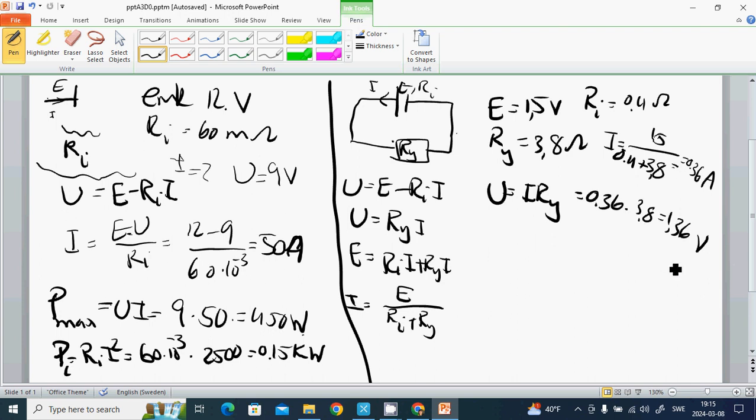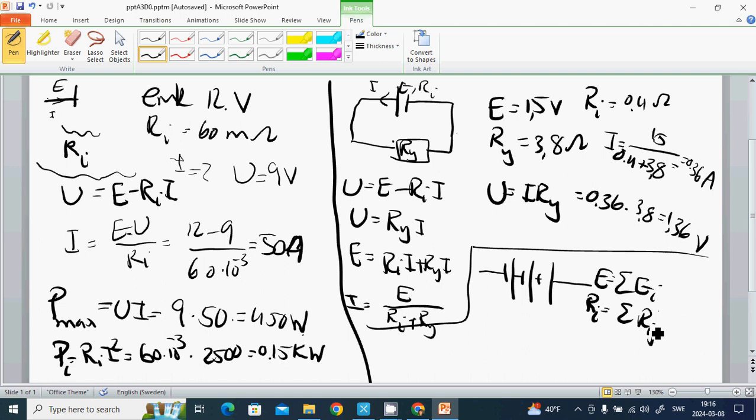If we connect batteries in series, then E equals the sum of Ei, and Ri equals the sum of Rij.